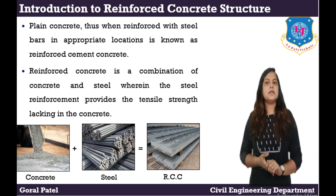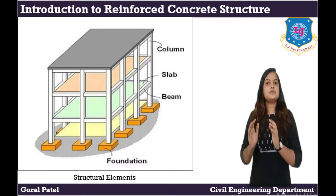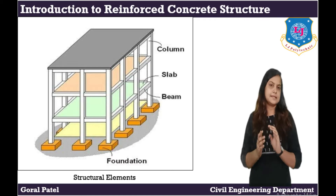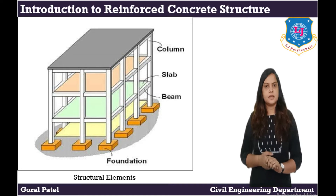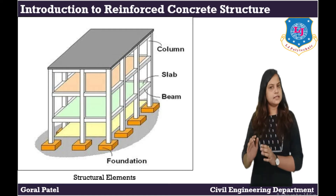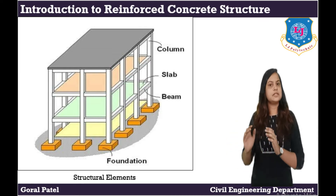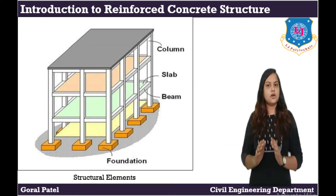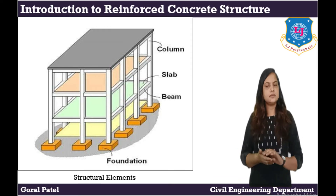Reinforced concrete is a combination of concrete and steel, where the steel reinforcement provides the tensile strength lacking in concrete. Reinforced cement concrete is reinforced with steel bars, steel plates, or steel mesh to increase the tension-withstanding capacity of the structure. In RCC, concrete is very weak in tension but steel has very good tensile strength. Therefore, steel is used in concrete. Additionally, the temperature coefficients of steel and concrete are nearly equal, so temperature stresses are reduced when steel is used in concrete.